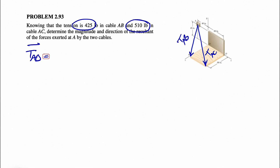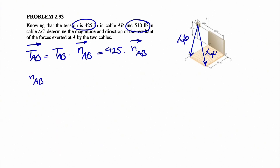To find TAB, we need the magnitude of TAB, which is 425, times the unit vector NAB, also written as lambda. So TAB equals 425 times NAB. To find the unit vector, we compute vector AB divided by the magnitude of AB. For that, we find the coordinates of the ending point B and subtract the starting point A.